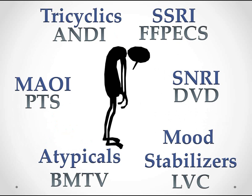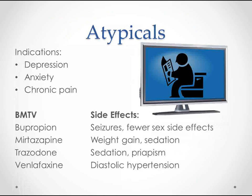I should have discussed this at the beginning: the main way we decide what to give for depression is based on side effects, because most of these are just as effective as each other. There are some special cases we'll talk about, especially with the atypicals. But in general, we're going to avoid the side effects that would be most detrimental to the patient.